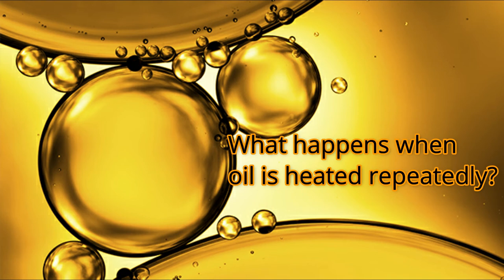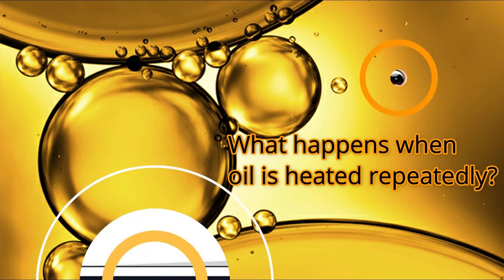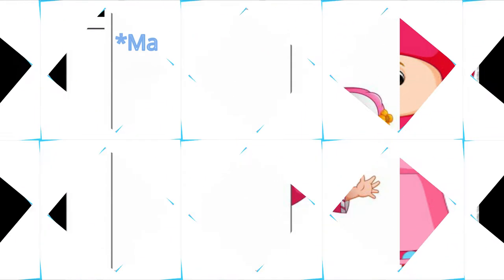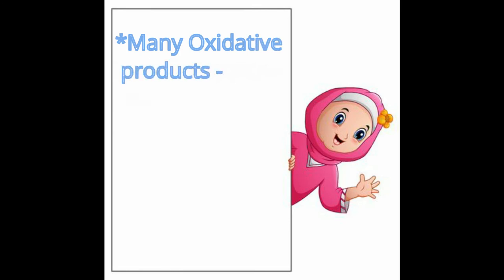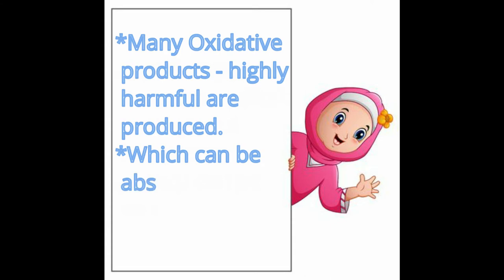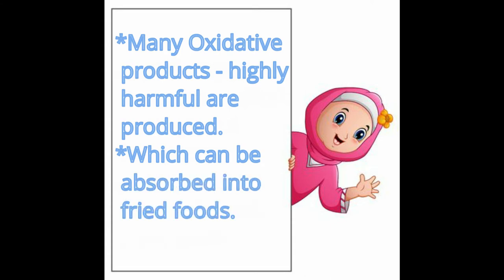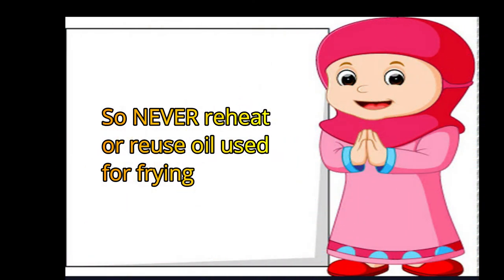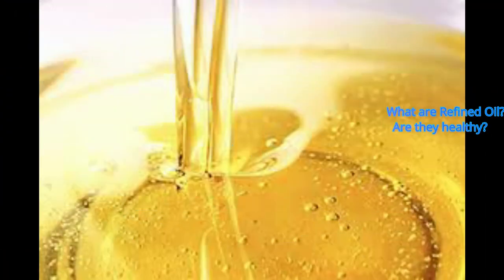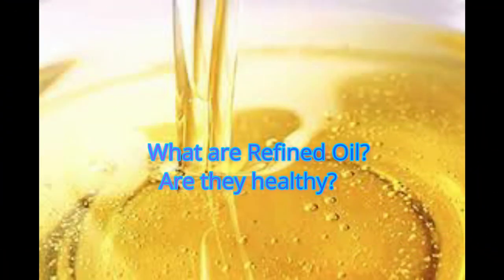What happens when oil is heated repeatedly? When heated repeatedly, the viscosity of the oil increases and it darkens in color. During this process, many oxidative products which are highly harmful are produced in the oil, which can be absorbed into the fried food. Hence, never reheat the oil used for frying and never reuse it.